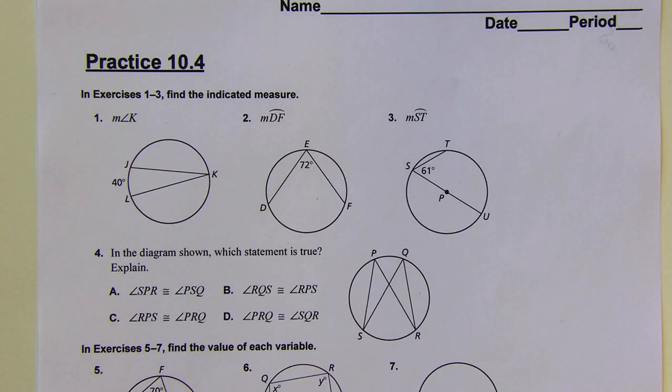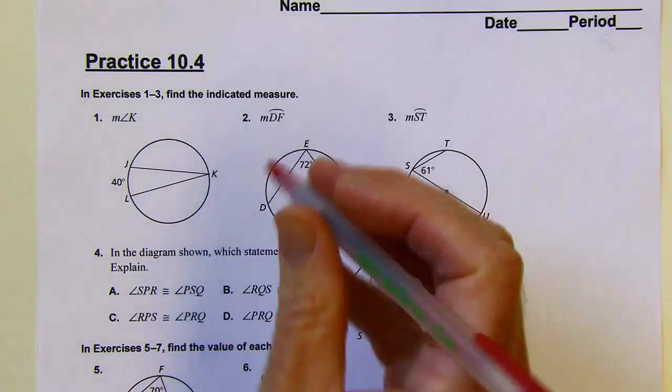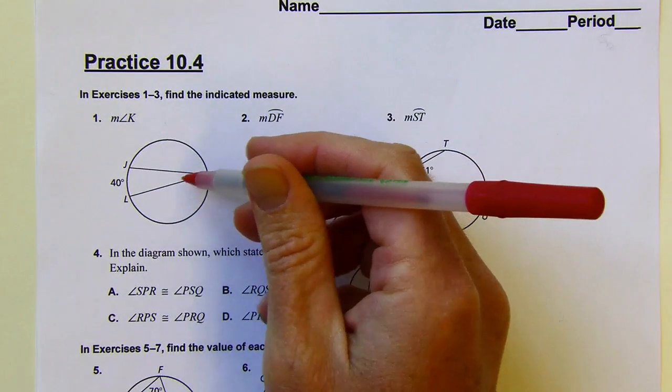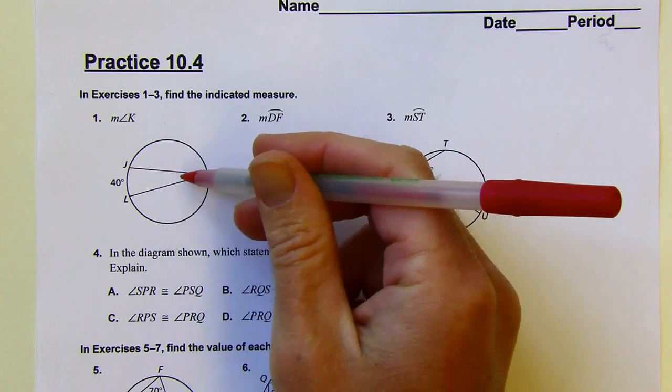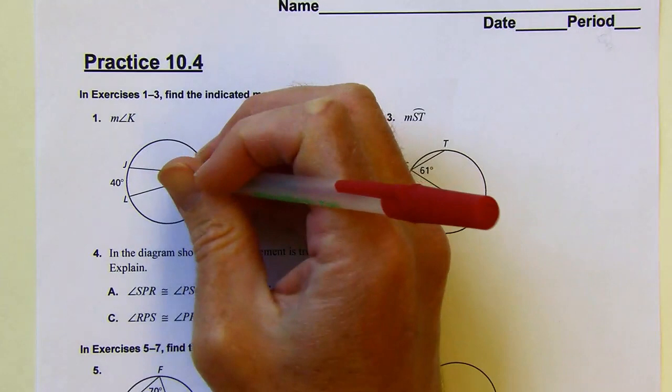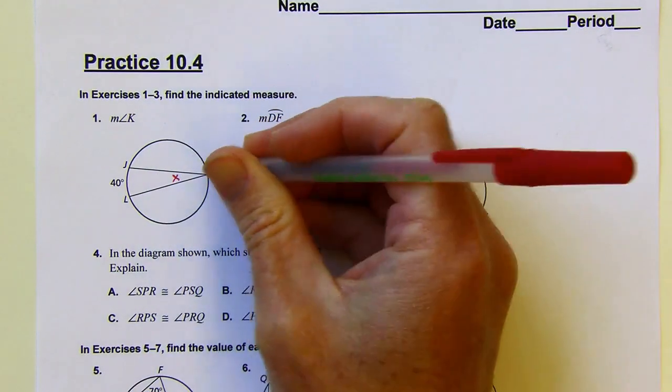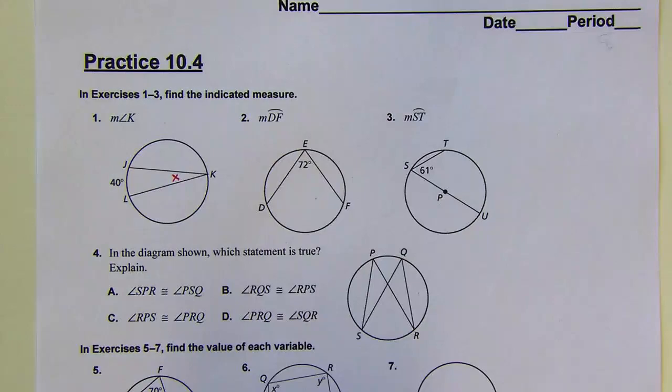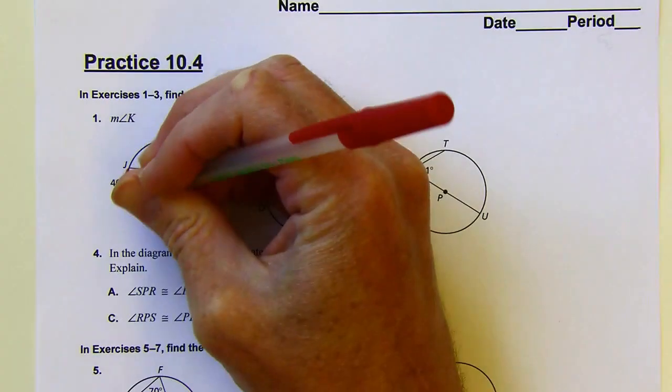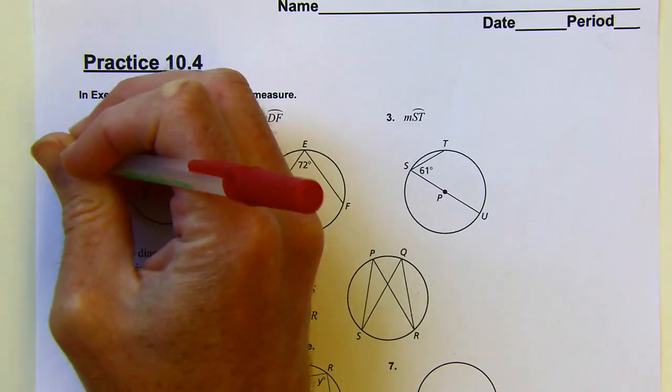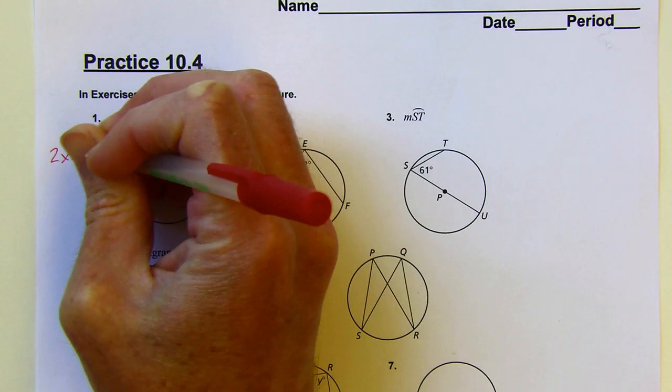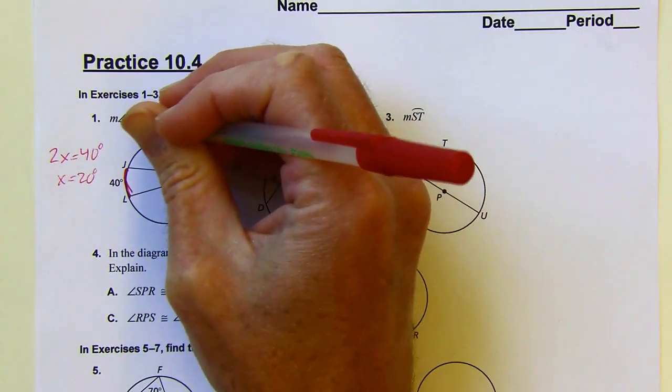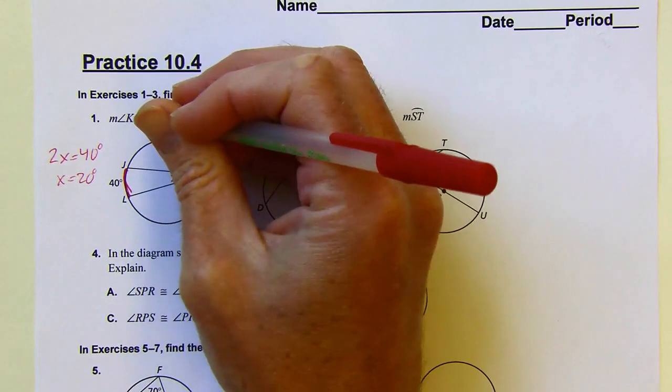Okay, practice 10.4. So when I have an inscribed angle, it's different than a central angle. If this were a central angle, the measure of this angle would be 40 degrees, but that's not the case. So let me just mark this as x. When you have an inscribed angle, if you double the measure of the inscribed angle, you're going to get the intercepted arc. So I can say 2 times x would equal 40 degrees, and that means x would equal 20 degrees. So the measure of angle k is 20 degrees.